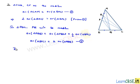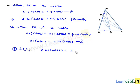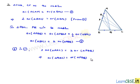Substituting equation 3 into equation 1, we get 2 times area of triangle ARC equals 2 times area of triangle PBQ. Which implies area of triangle ARC equals area of triangle PBQ. This completes the first proof.